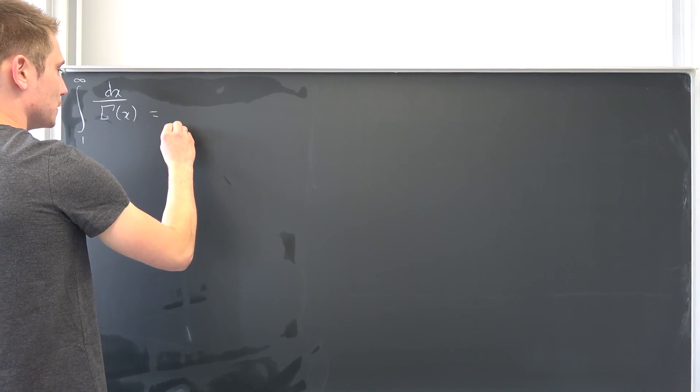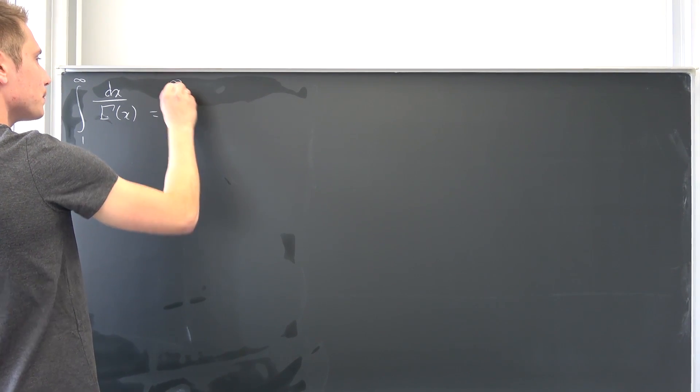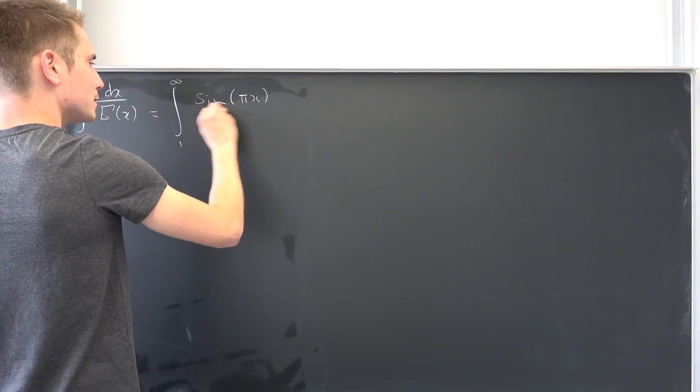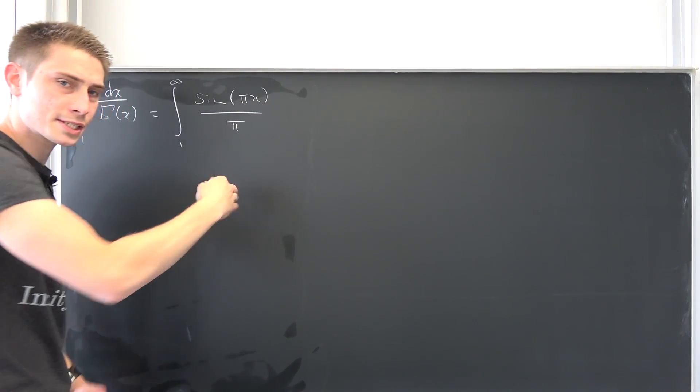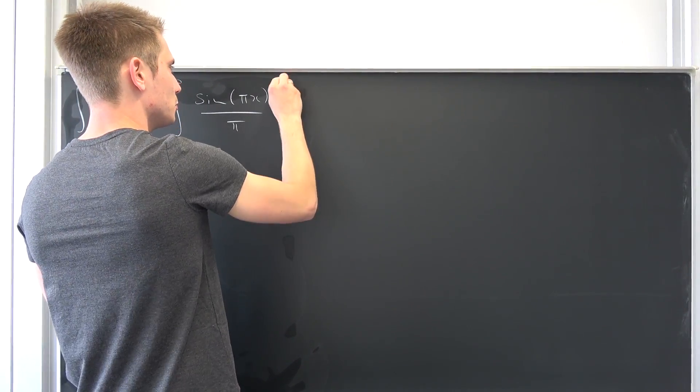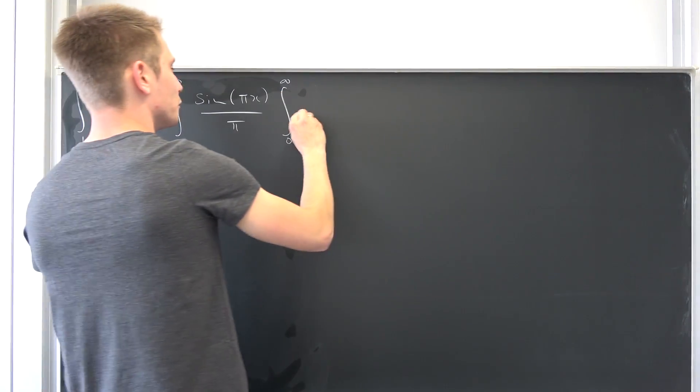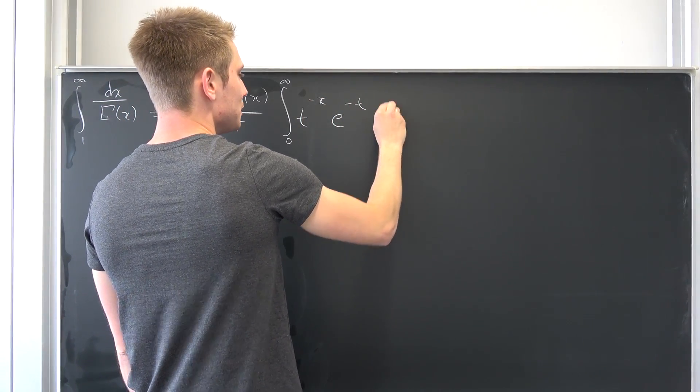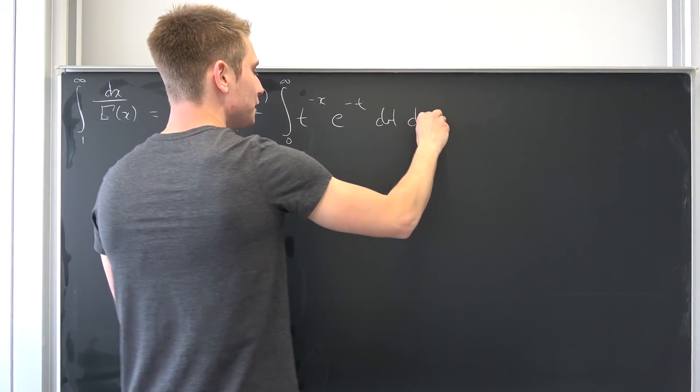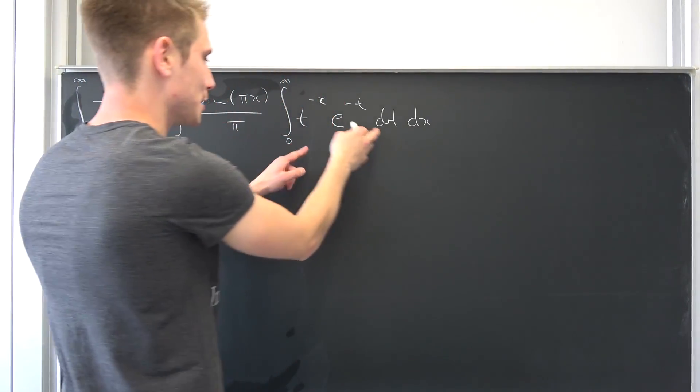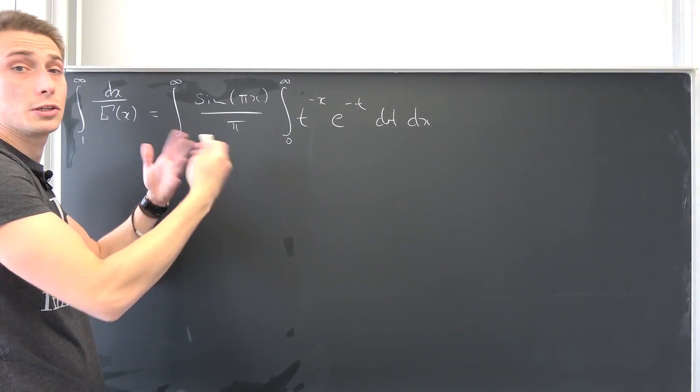Once again the same Spiel, so integral from one to infinity of sine of pi times X over pi times gamma of 1 minus X, resulting in the integral from 0 to infinity of T to the negative X, e to the negative T, integrated with respect to T, integrated with respect to X.